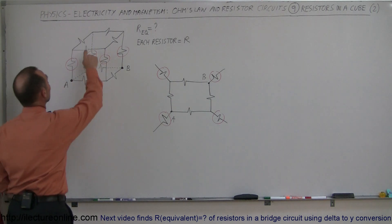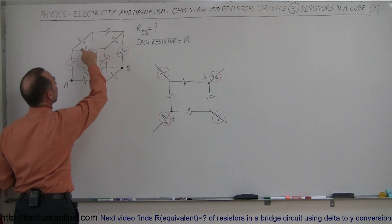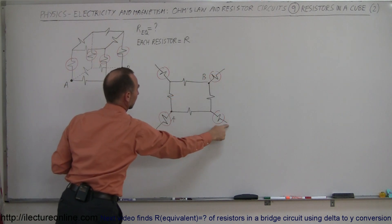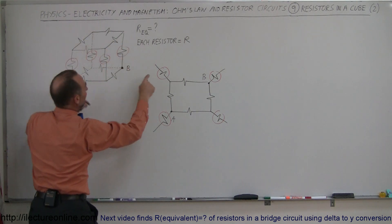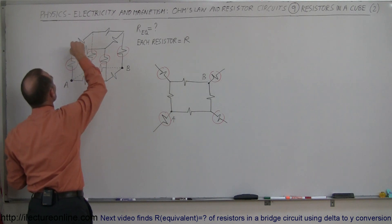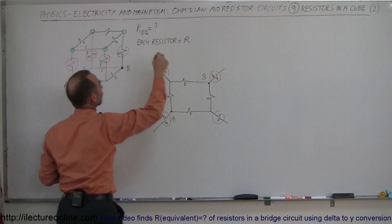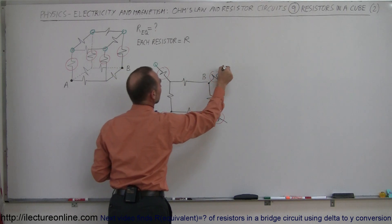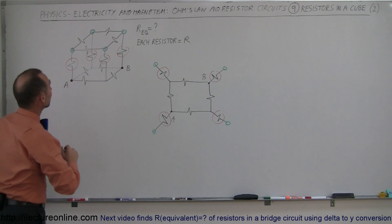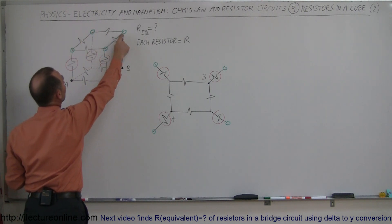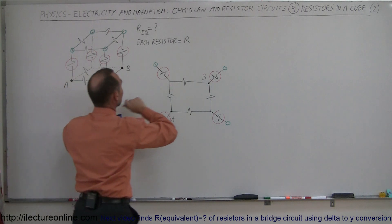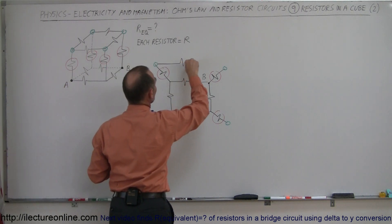Next, we still have the four resistors at the very top. Notice they're all connected together and connected to the ends of these. These are the four corners there, and these are the four corners here — circled in green. All we have to do is realize that these other four at the very top simply connect from green corner to green corner. So when we draw them over there, it's going to look like this: a resistor this way.